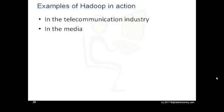In the media, we have the New York Times, which wanted to host on their website all public domain articles from 1851 to 1922. They converted articles from 11 million image files to 1.5 terabytes of PDF documents. This was implemented by one employee who ran a job in 24 hours on a 100-instance Amazon EC2 Hadoop cluster at a very low cost.